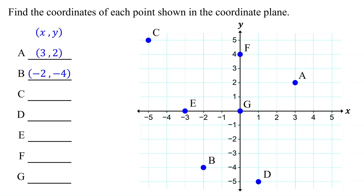Now, please pause the video and find the coordinates of point C. First, move vertically to the x-axis to find its x-coordinate, which is negative 5. Then, move horizontally to the y-axis to find its y-coordinate, which is 5. So, the coordinates of point C are (-5, 5).